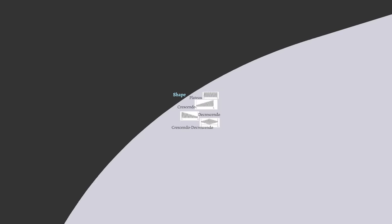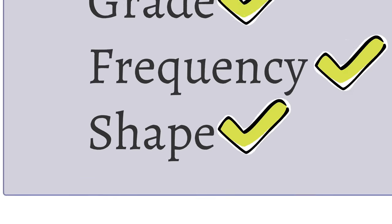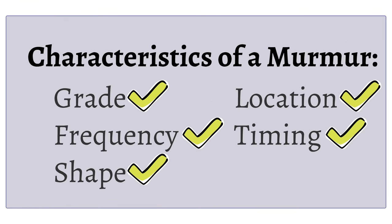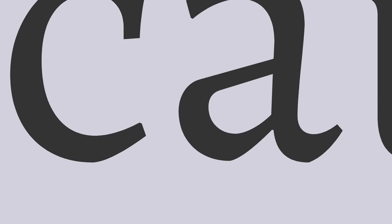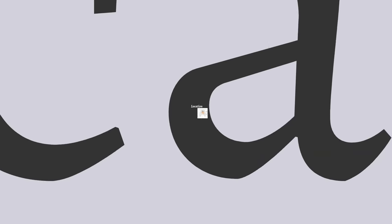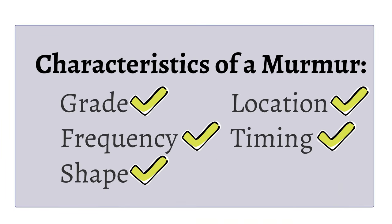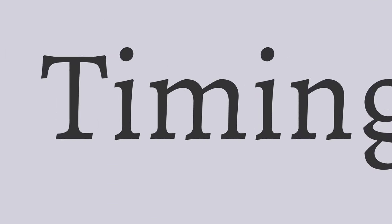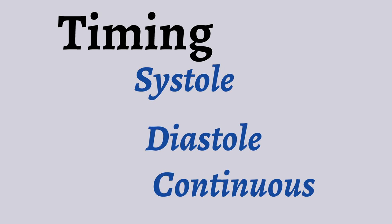Next, location is important. For example, is the murmur best heard at the apex or parasternally? The last descriptive feature of a murmur is timing. Murmurs can occur in systole, diastole, or as continuous murmurs, meaning in both systole and diastole.